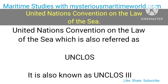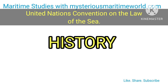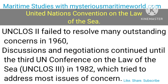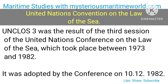The United Nations Convention on the Law of the Sea, also referred to as UNCLOS, is also known as UNCLOS III. UNCLOS II failed to resolve many outstanding concerns in 1960, and discussions and negotiations continued until the third UN Conference on the Law of the Sea, UNCLOS III, in 1982, which tried to address most issues of concern. UNCLOS III was the result of the third session of the United Nations Conference on the Law of the Sea, which took place between 1973 and 1982. It was adopted by the Conference on 10 December 1982.